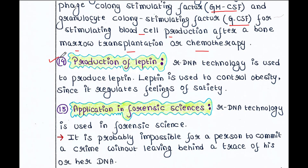Next is production of leptin. Leptin is used to control obesity since it regulates feelings of satiety — meaning the feeling that you are full and don't need food anymore. rDNA technology is used to produce leptin, and you can clone the gene easily in a vector.